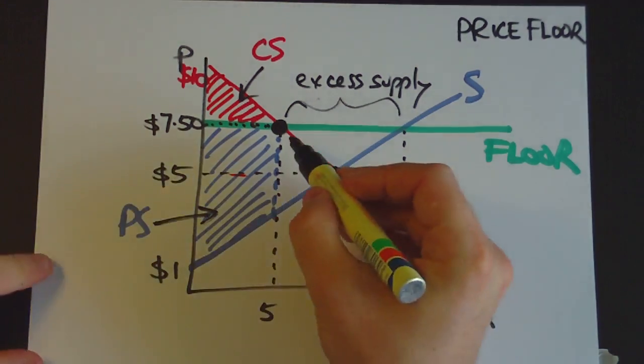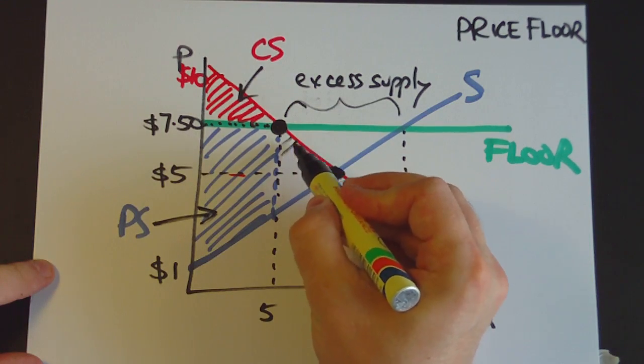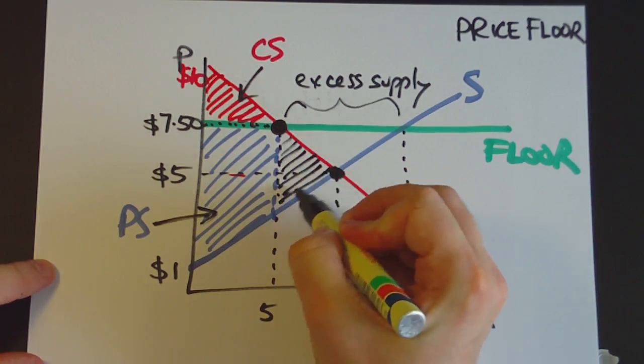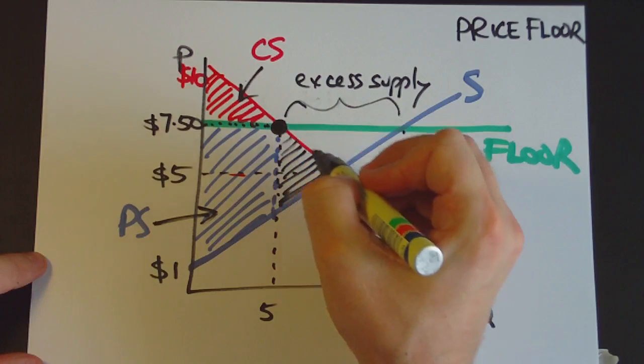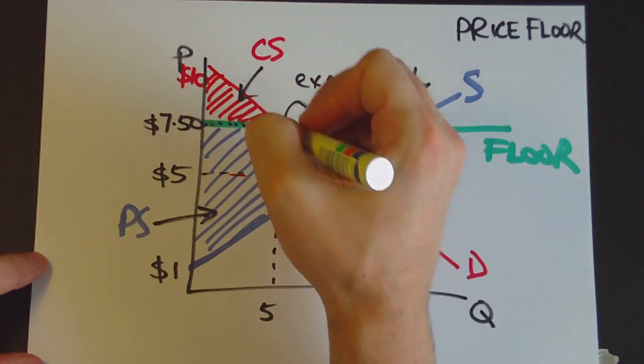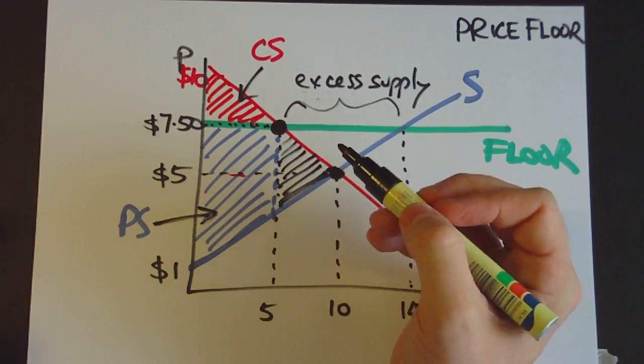But notice, there's this area here that's been left white. This is called a deadweight loss, because before, this little triangle here was distributed amongst consumers and producers, but now no one gets it.